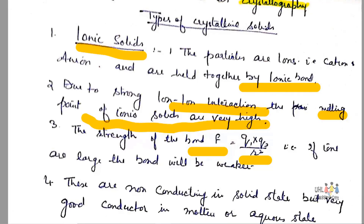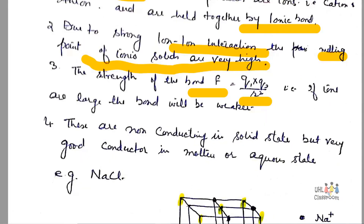The strength of bond F is given by the product of charges Q1 and Q2 upon R squared, where R is the distance between the two ions. If the ions are large, the bond will be weaker, or vice versa. These are non-conducting in solid state, but they are very good conductors in molten or aqueous state.